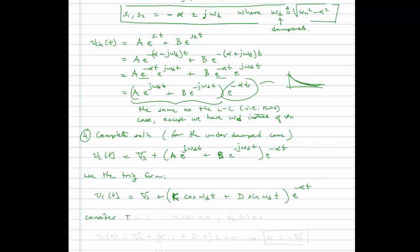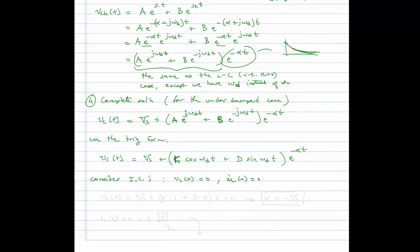Let's apply the initial conditions. The first is that capacitor voltage V_C(0) = 0 and inductor current I_L(0) = 0. Evaluating V_C at t=0: V_S + K·cos(0) + D·sin(0), all times e^0, equals zero. This gives V_S + K = 0, so K = -V_S.